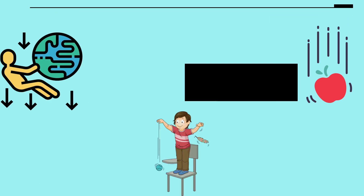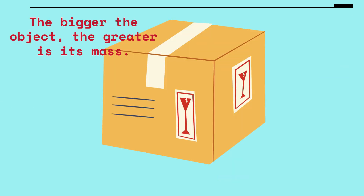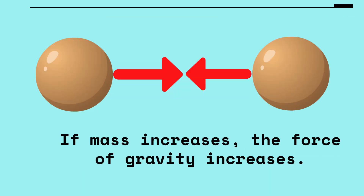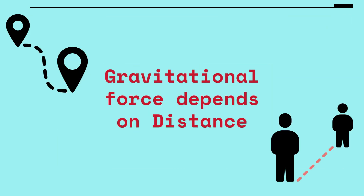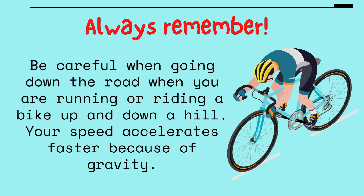Any object that has mass has gravity. Mass refers to the amount of matter present in an object — the bigger the object, the greater its mass, and the greater its gravitational pull. If mass increases, the force of gravity increases. Gravitational force also depends on distance: if distance increases, the force of gravity decreases. When running or riding a bike up and down a hill, your speed accelerates faster because of gravity.